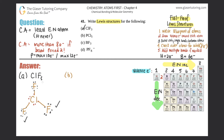Now part B: PCl₅. Who goes in the center — phosphorus or chlorine? Phosphorus is less electronegative according to the trends, so phosphorus goes in the middle surrounded by five chlorines. Phosphorus has five valence electrons and chlorine has seven, so I'll draw five dots around phosphorus and seven around each chlorine.